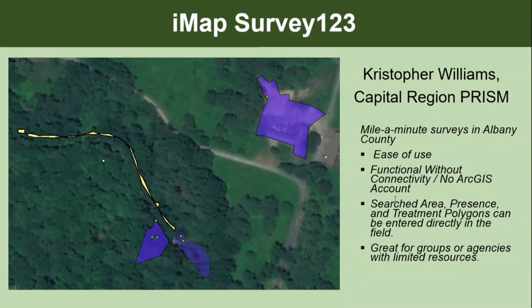Especially if you want to report your presence and treatments, your survey areas, in a little bit more detail by drawing a polygon. It's one thing to put a point in on the IMAP Mobile Advanced or IMAP mobile app and then go online and draw a polygon — this is where you can actually get the polygons for the survey, presence, and treatment all in the field. It's kind of like the next step if you don't have a lot of capacity or capability.